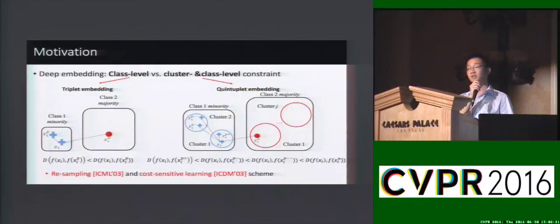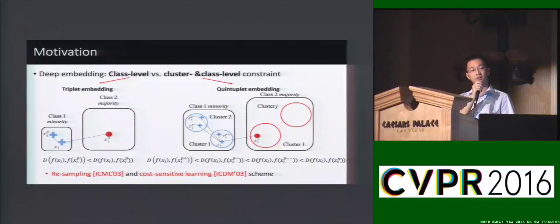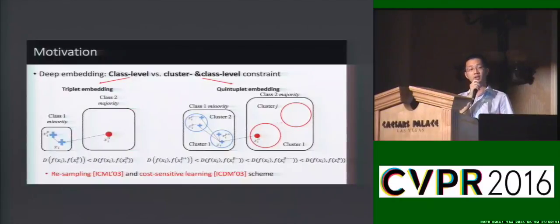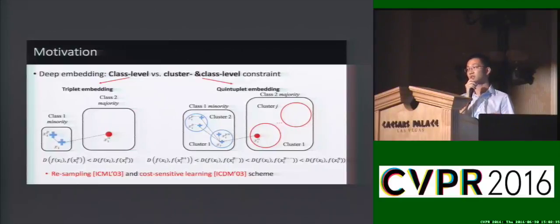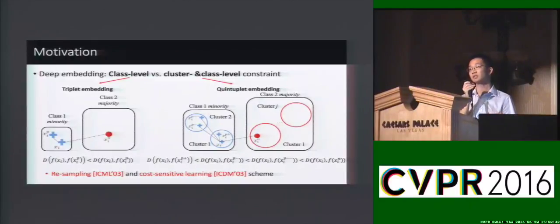Our goal is to directly learn deep feature embedding to benefit the imbalanced classification. Traditional deep embedding methods just operate at the class level. An example is the triplet embedding that ensures the within-class distance is smaller than the between-class distance, which squeezes every single class homogeneously into a small neighborhood.